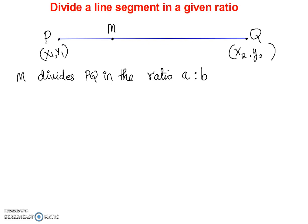In this section we are going to talk about how to divide a line segment in a given ratio. So if you have a line segment PQ and you have a point M that divides this line segment in a given ratio, for example here let's say the given ratio is A to B.